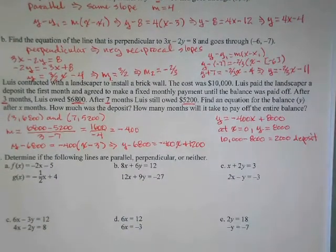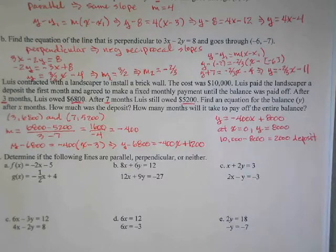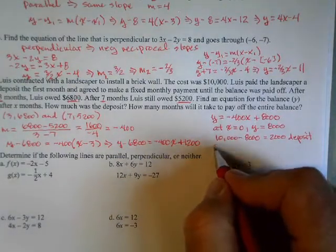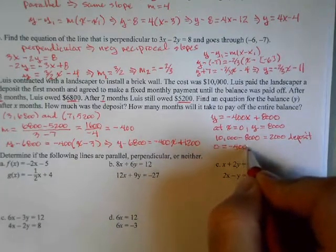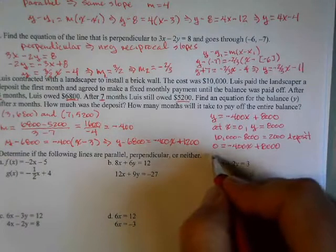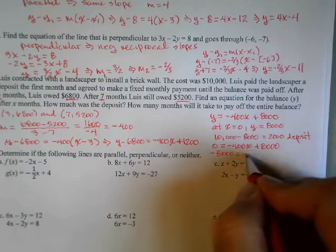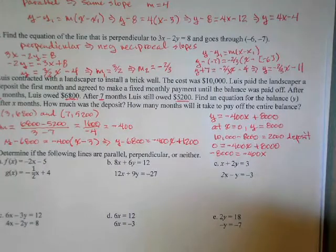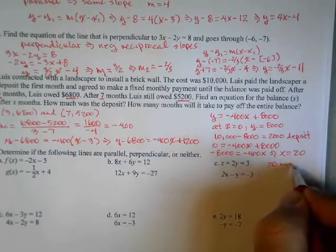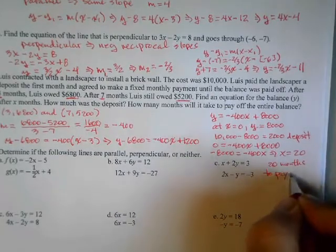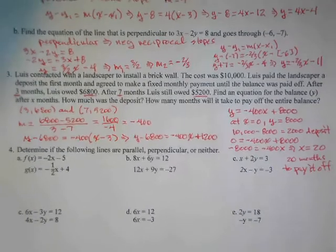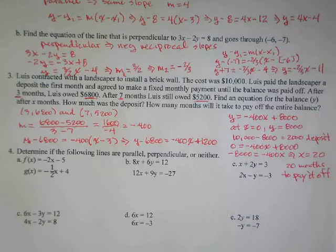The second part asks how long it will take to pay off the entire balance. Since y represents the balance at any given time, if fully paid off y equals 0. Setting 0 equals negative 400x plus 8000, moving the 8000 and dividing both sides by negative 400, x equals 20. So it takes 20 months to pay off — an example of using point-slope form in a real-life linear function.